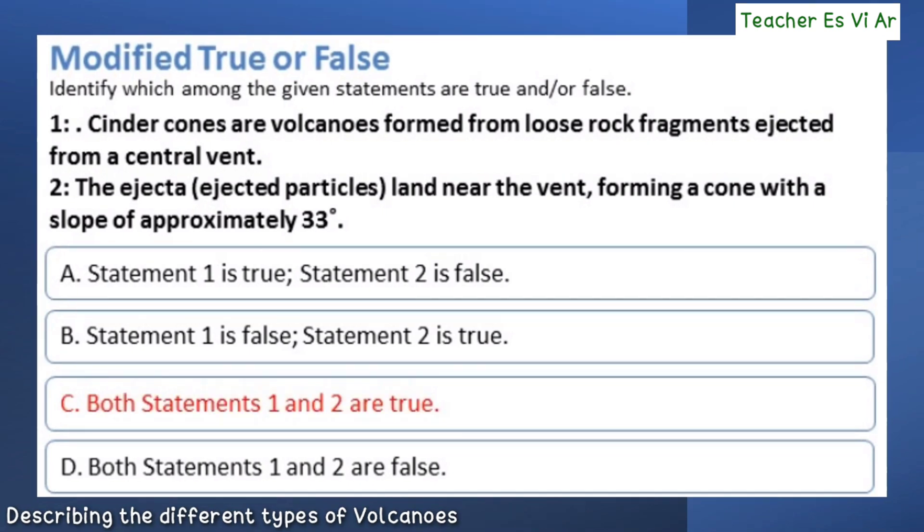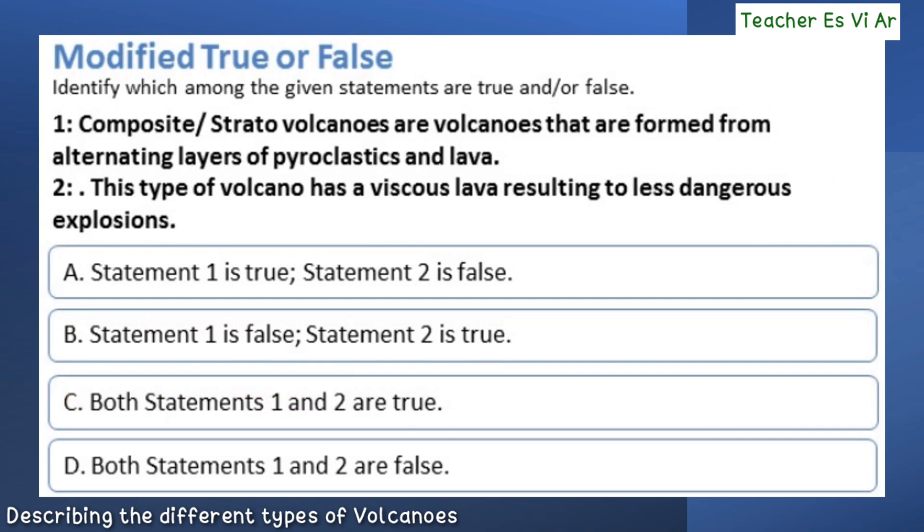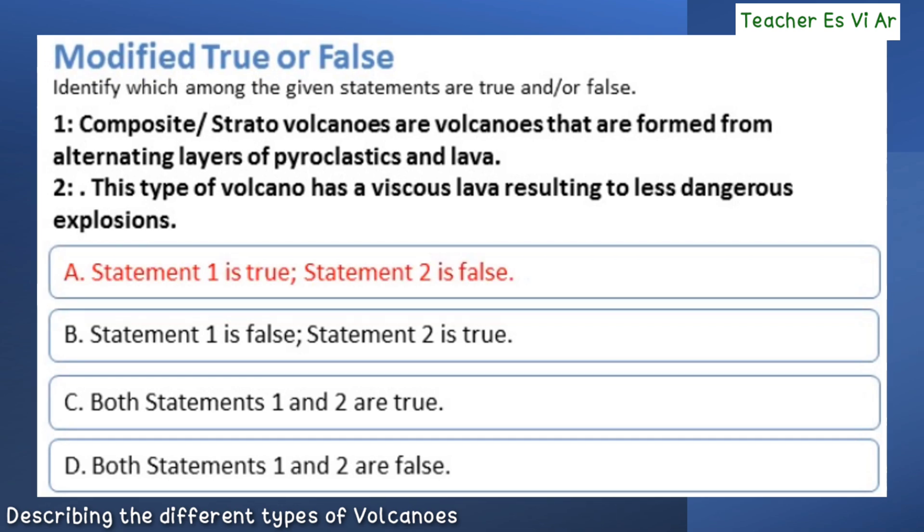The correct answer is letter C: both statements one and two are true. The correct answer is letter A: statement one is true, statement two is false.